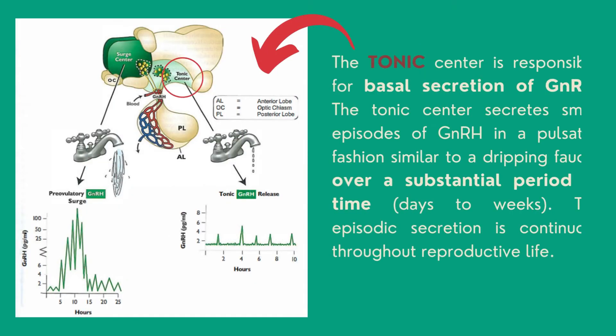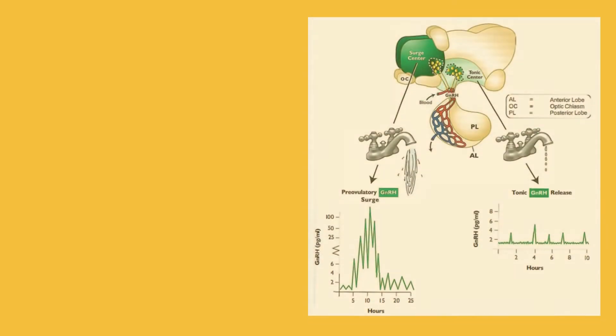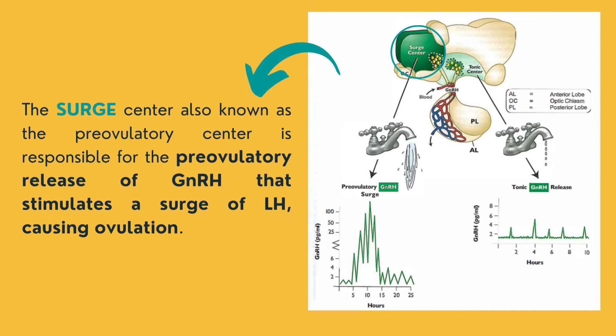The tonic center is responsible for basal secretion of GnRH. It secretes small episodes of GnRH in a pulsatile fashion, similar to a dripping faucet, over a substantial period of time — maybe days to weeks — and this episodic secretion is continuous throughout reproductive life. The surge center, also known as the pre-ovulatory center, is responsible for the pre-ovulatory release of GnRH that stimulates a surge of LH, causing ovulation.